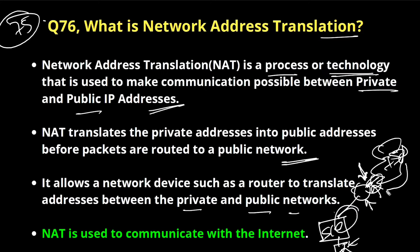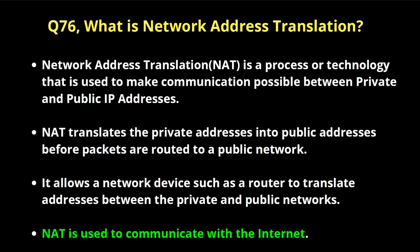When a reply comes back to the router, the router will translate public to private. Suppose here is a Facebook server and my client is requesting to the Facebook server. On this router, NAT will translate the private IP address into the public IP address which is running on the exit interface. And when the reply comes, this router will translate the public IP address — the IP address which Facebook server is using — into the private IP address that my machine is using. So NAT is a technology or process which is used to make communication possible between private and public network.